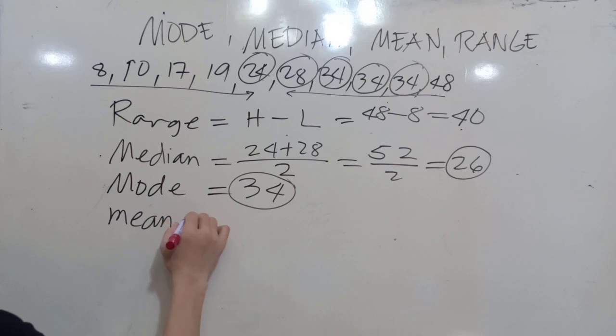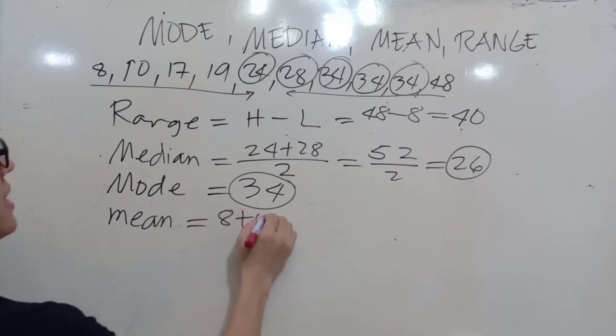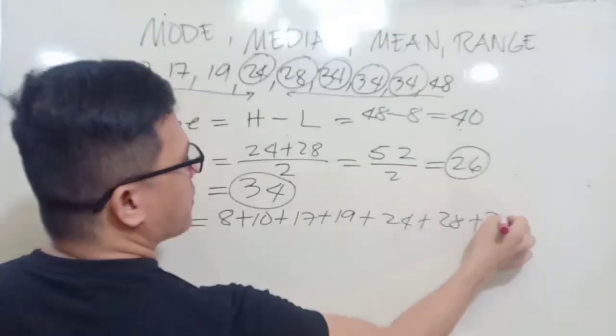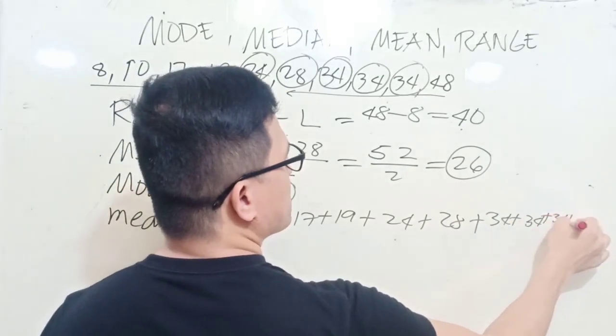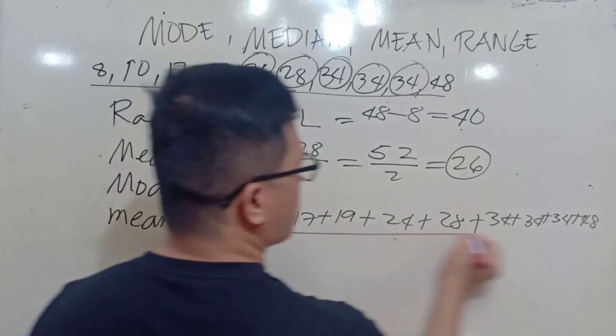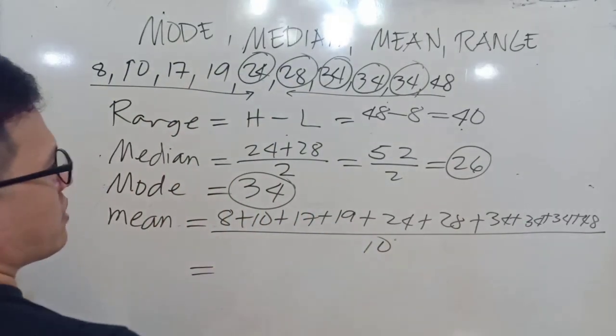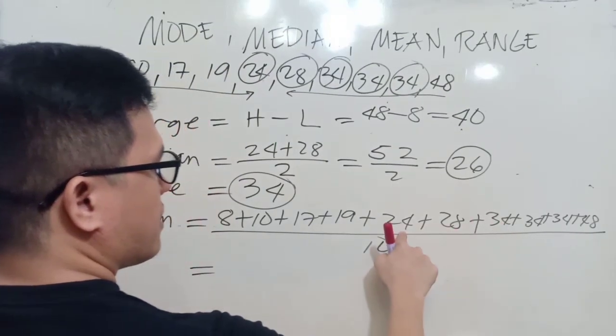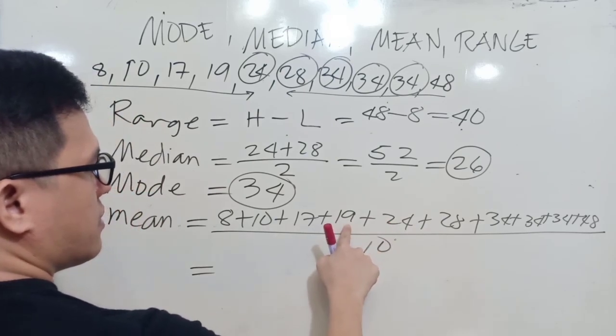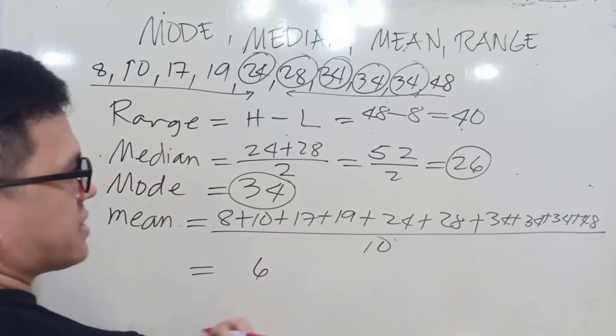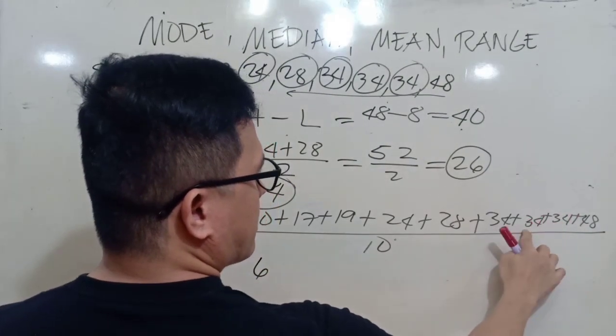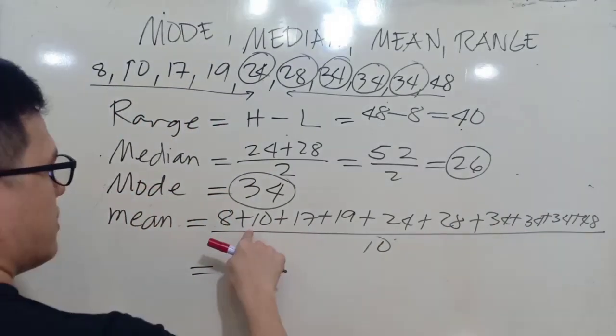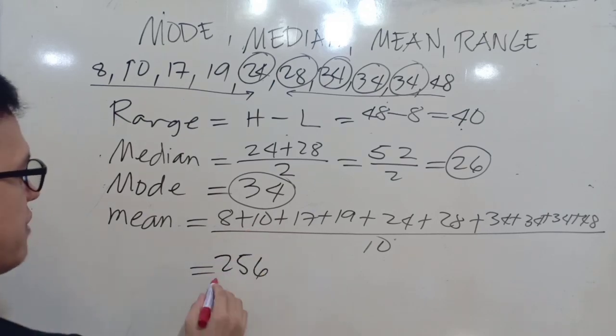How about our mean or the average? We have 8 plus 10 plus 17 plus 19 plus 24 plus 28 plus 34 plus 34 plus 34 plus 48, and then divided by the total number of data, which is 10. This one is 256 divided by 10.